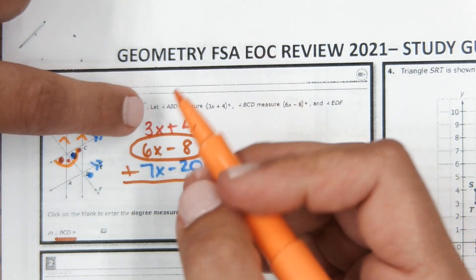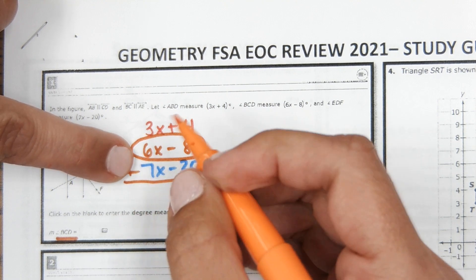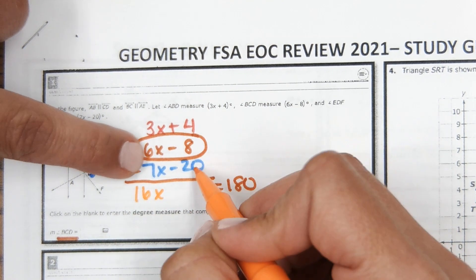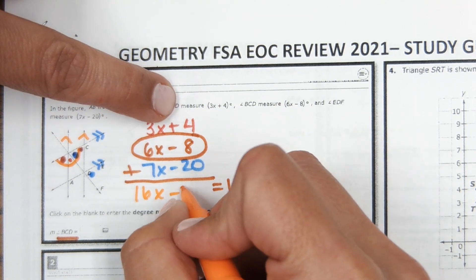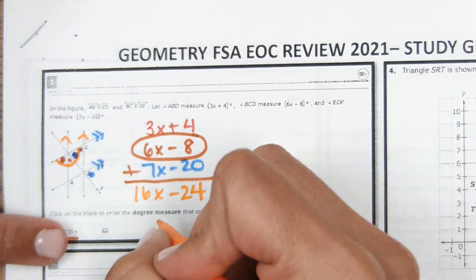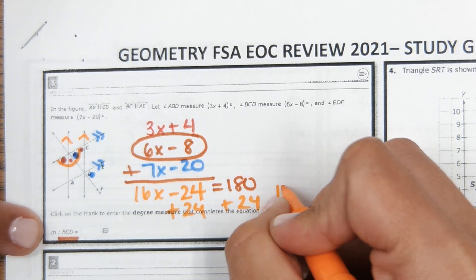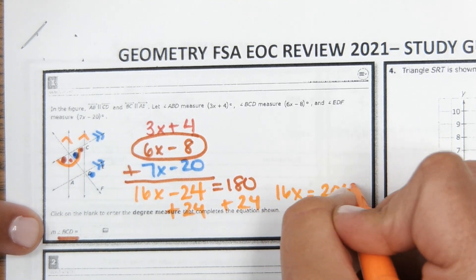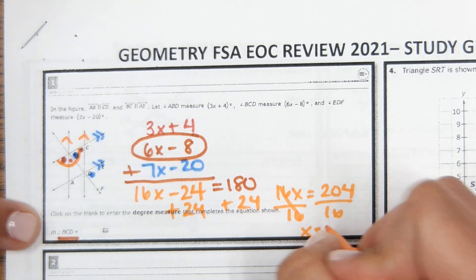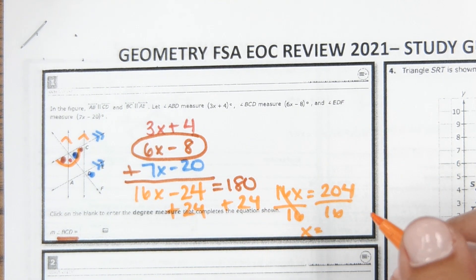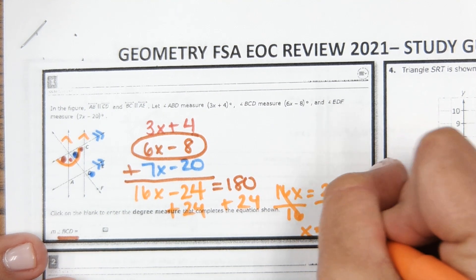Adding the angles: 3x plus 6x plus 7x gives 16x, and the constants: 4 minus 8 minus 20 gives negative 24. So 16x minus 24 equals 180, which means 16x equals 204. Dividing by 16 gives x equals 12.75.